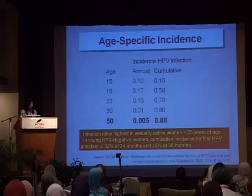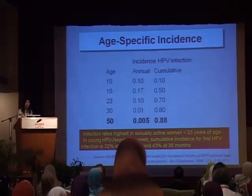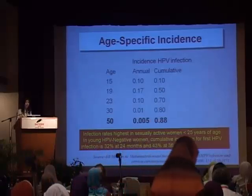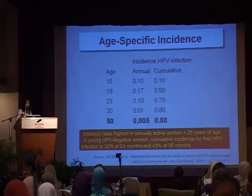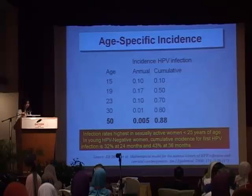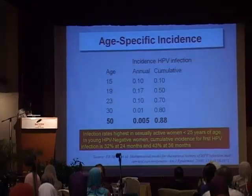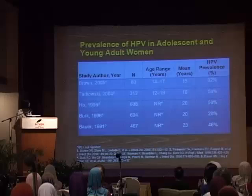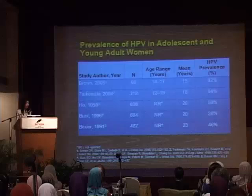This slide shows the age-specific incidence of HPV infections. The infection rate is highest in sexually active women under the age of 25. And in young HPV-negative women, cumulative incidence for the first HPV infection is 32% at 24 months and 43% at 36 months. From this table, you can see that HPV infection seems to be highest in the adolescent age group.